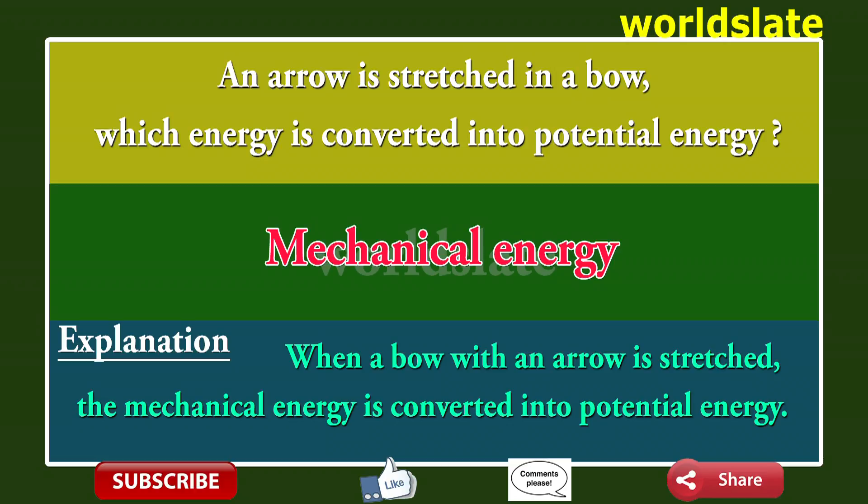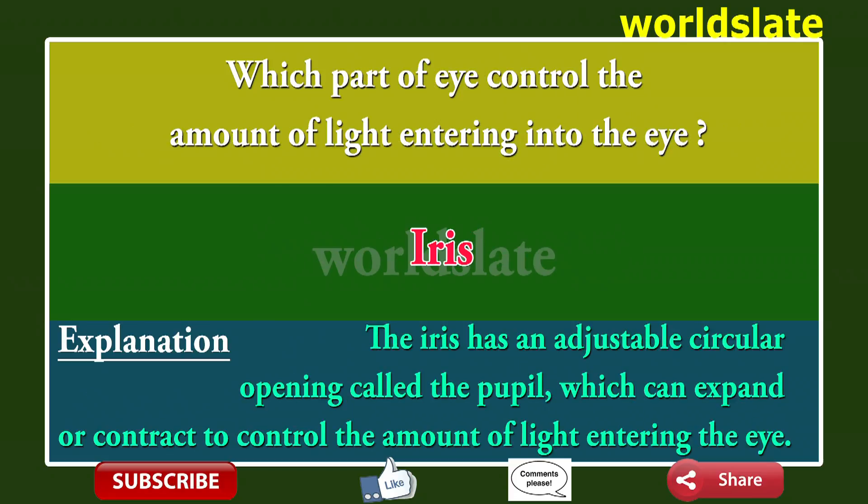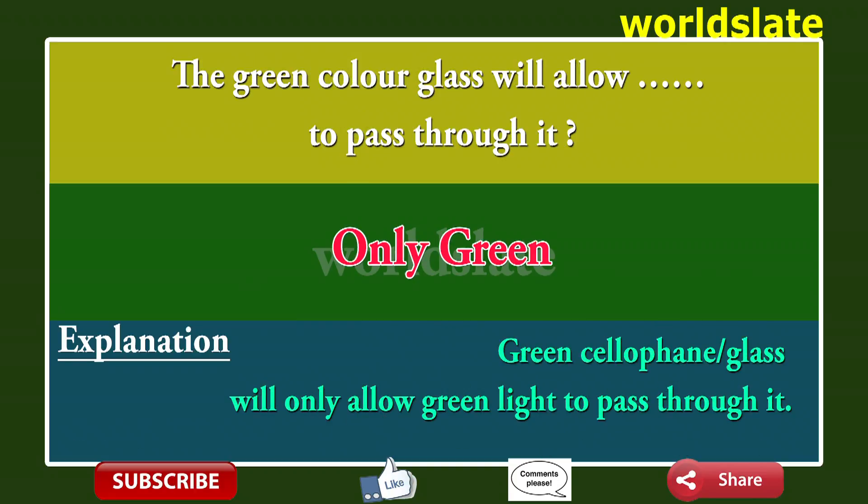Explanation: When a bow with an arrow is stretched, the mechanical energy is converted into potential energy. Question: Which part of the eye controls the amount of light entering the eye? Answer: Iris. Explanation: The iris has an adjustable circular opening called the pupil, which can expand or contract to control the amount of light entering the eye.